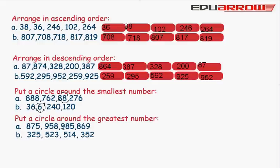Put a circle around the greatest number: 875, 958, 985, 869. We can see 985 is the greatest number.